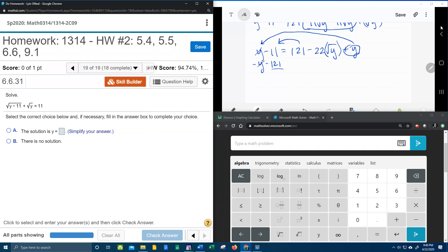I've already got a negative 11 over there. So what is negative 11 minus 121? That is negative 132 equals, and now this is gone, and this is gone, so all I have left is negative 22 square root of y.